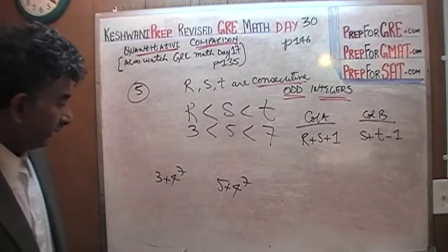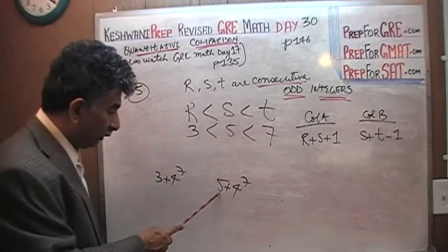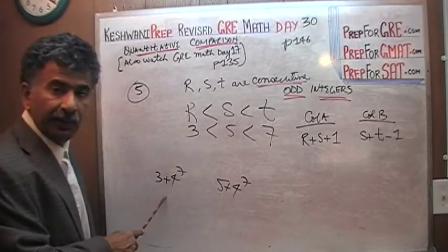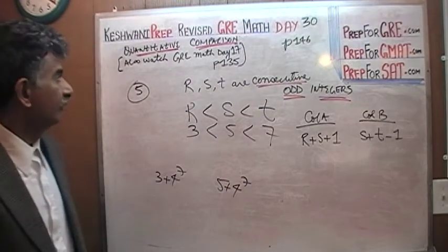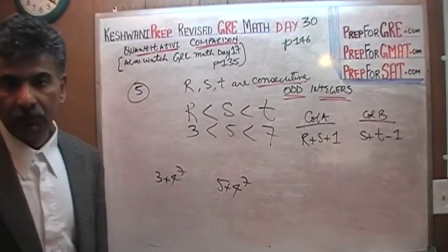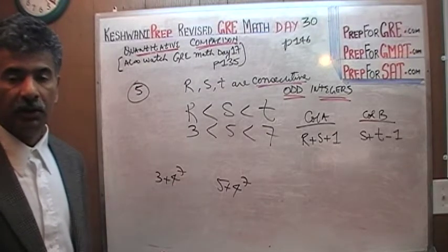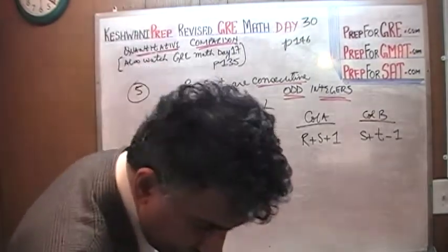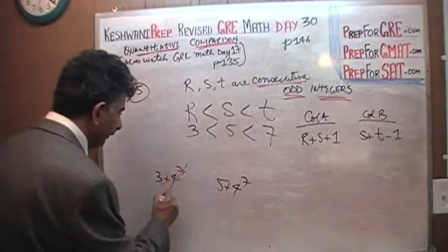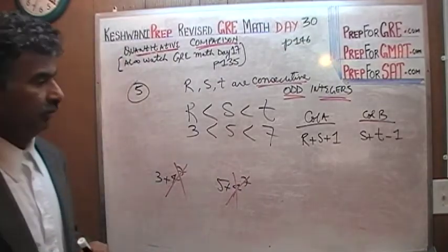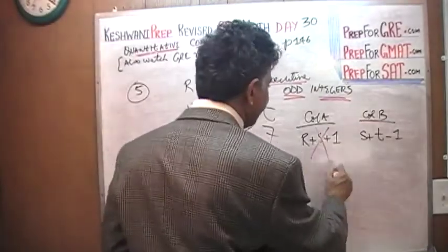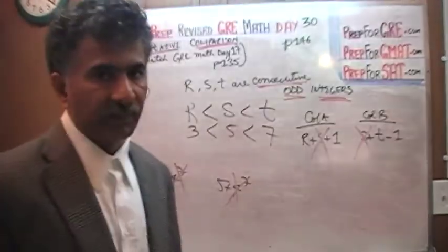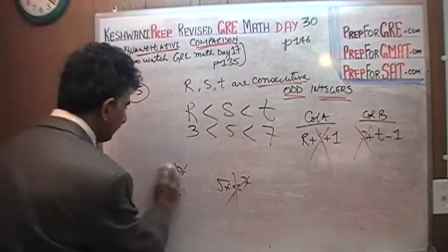And if you did that, you missed the point. These questions are called quantitative comparison. Your job is to compare the two quantities. Do not compute the bloody things. Do you understand? Just compare them. So, here I see 4 to 7 appears in this column. It plays no role. It plays no role. S appears in this column. S appears in this column. Don't waste your time with S. It plays no role. Just subtract S from the two columns and just compare the rest of it.